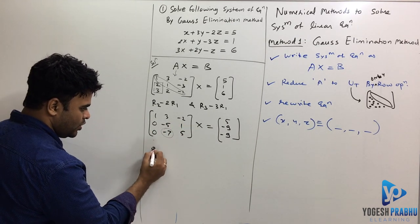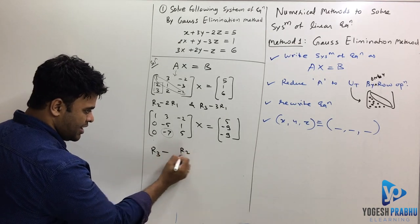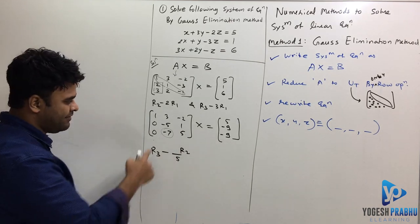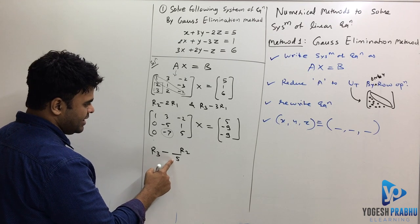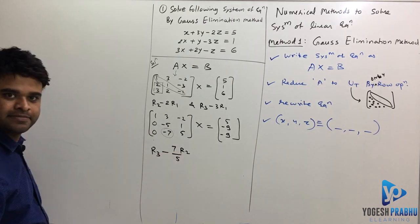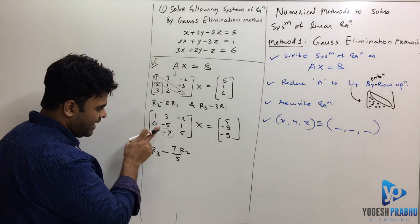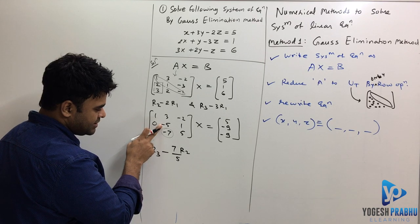I will do R3 minus R2. I'll divide R2 by 5. What if I divide R2 by 5 and 7? If I apply R2 by minus 7 by 5, 5 will cancel out and you get minus 7.